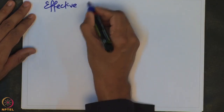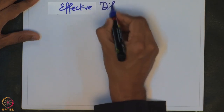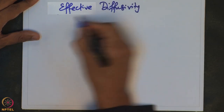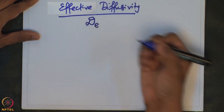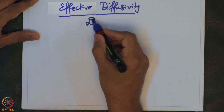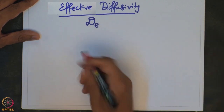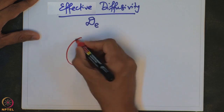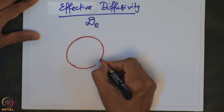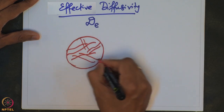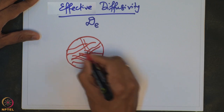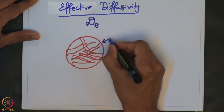In order to quantify the internal diffusion process, it is useful to define what is called effective diffusivity. The typical symbol used for effective diffusivity is D with a subscript E. Let us now look at the catalyst pellet again. There are several pores which are actually present in the catalyst pellet, and here is the pore mouth.